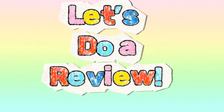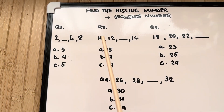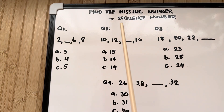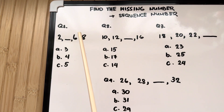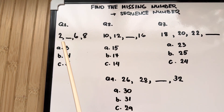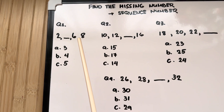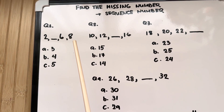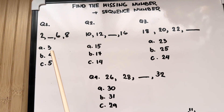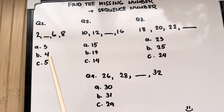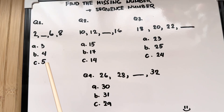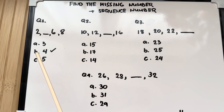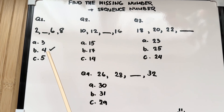Let's do a review. Let's find the missing number. Question number 1: 2, blank, 6, 8. What is the correct answer? Is it letter A: 3? B: 4? Or C: 5? And the right answer is letter B: 4.